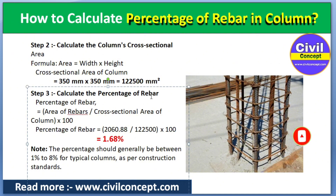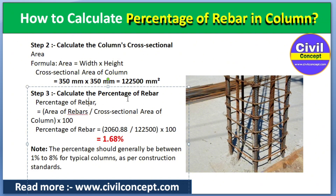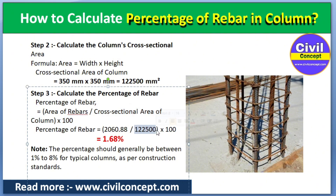In step one we calculated the area of rebar, in step two we calculated the cross-section area of the column, and now in step three we calculate the percentage of rebar. The formula is: (area of rebar / cross-section area of column) × 100. So 2060.88 divided by 122,500, multiplied by 100, gives us 1.68%.